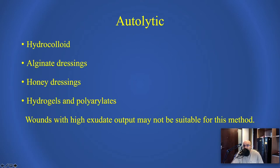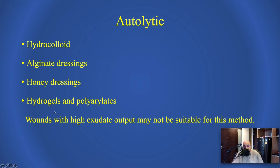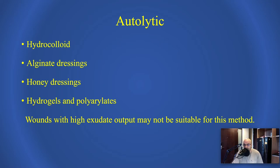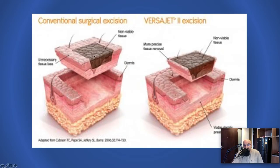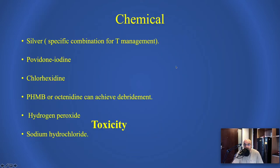As surgical debridement is sometimes a very hard option, we go for autolytic debridement. We use materials that cause defragmentation between bad tissues and good tissues, such as hydrocolloid, alginate dressings, honey dressings, hydrogels, and polyurethane foams. Hydrogels should be used with consideration for the wound's exudate condition, as hydrogel is more than 80-90% water — giving the wound that amount of water may increase exudate, which can be problematic.